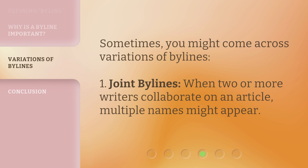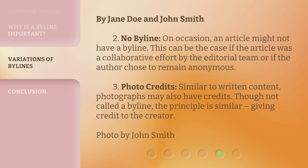Sometimes you might come across variations of bylines. One: joint bylines — when two or more writers collaborate on an article, multiple names might appear, such as 'By Jane Doe and John Smith.' Two: no byline — on occasion, an article might not have a byline. This can be the case if the article was a collaborative effort by the editorial team, or if the author chose to remain anonymous. Three: photo credits — similar to written content, photographs may also have credits. Though not called a byline, the principle is similar — giving credit to the creator, such as 'Photo by John Smith.'